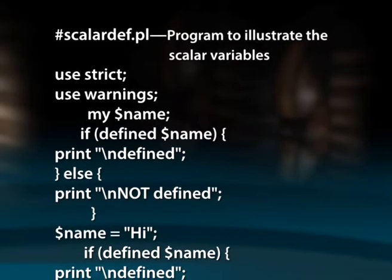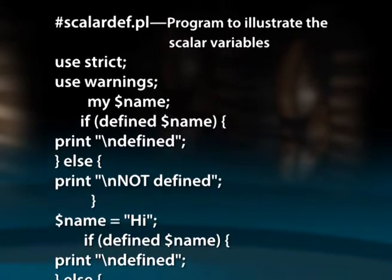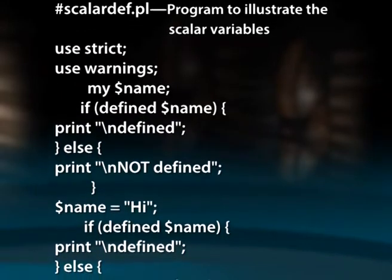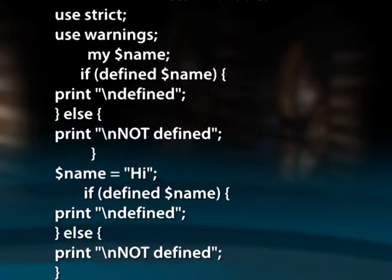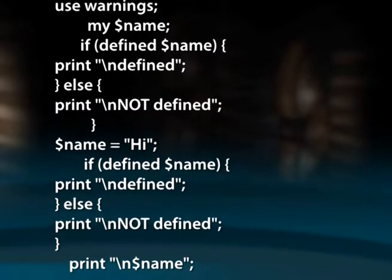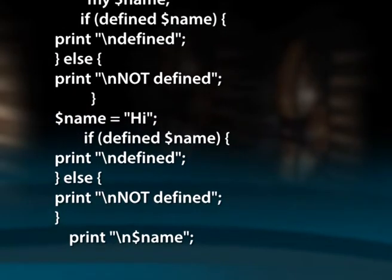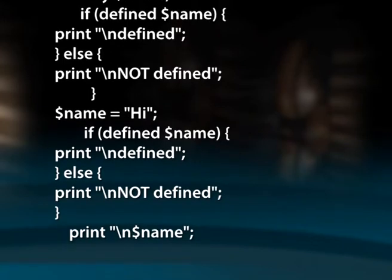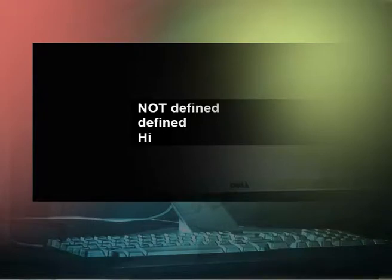We can check if a variable is undef or not using the defined function. Here, scalar_def.pl is a Perl program to illustrate scalar variables. Use strict, use warnings, and a variable name is declared as my $name. If defined $name, print 'defined'; else print 'not defined'. Now it is initialized with a string: $name equal to 'hi'. If defined $name, print 'defined'; else print 'not defined'. The output generated will be as shown in the figure.